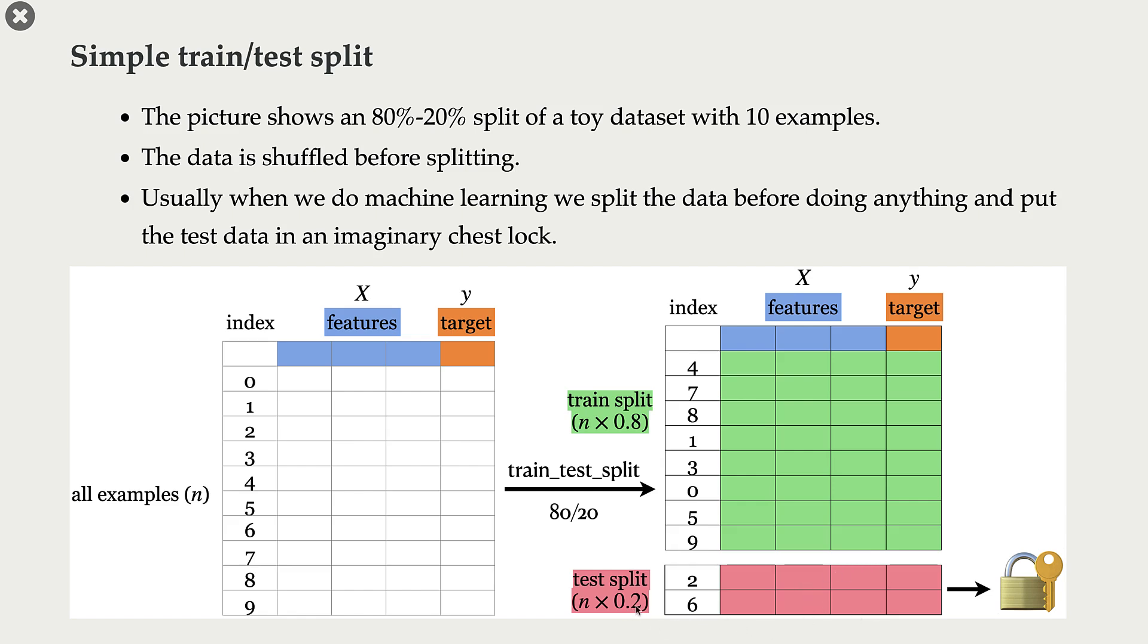So this green portion is my train split and pink portion is my test split. Notice the indices here. When we call train_test_split, it first shuffles the data and then splits it into train portion and test portion. And here I'm showing you this lock just to convey this idea that once we split the data, we put this test data aside. We put it in this imaginary chest lock. So we do not touch it when we are building our model.